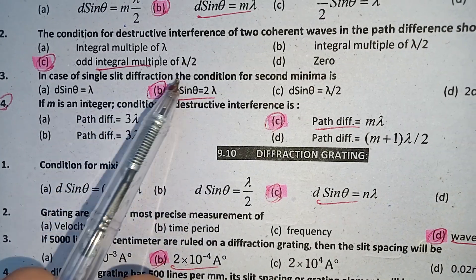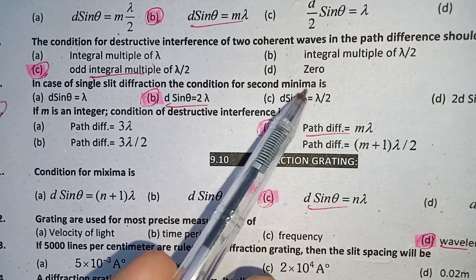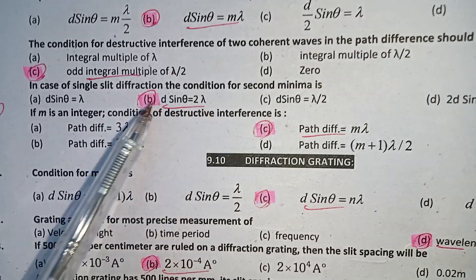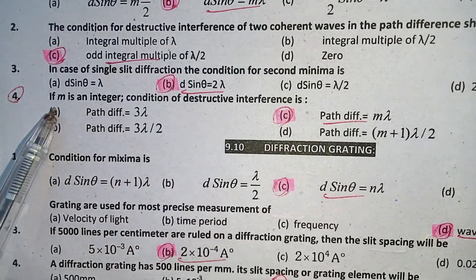Question three: In case of single slit diffraction, the condition for the second minima is d sin theta equals two lambda. B is the right answer. Question four: If m is an integer, condition for destructive interference is...